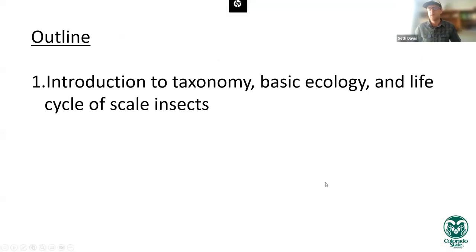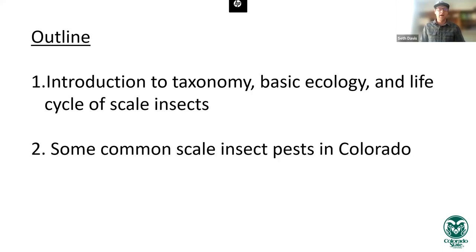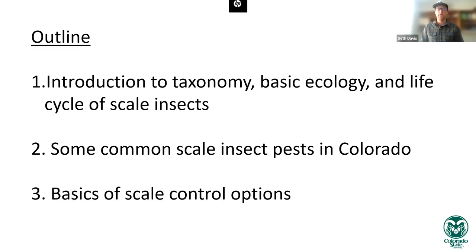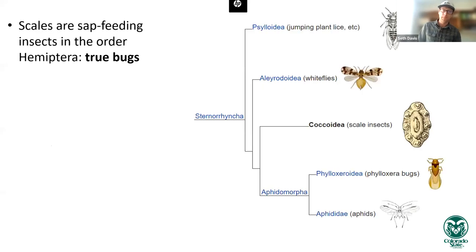The outline of the talk covers basic taxonomy and ecology, the life cycle of scales, common scale pest insects in the region — the three examples I'll give are also common throughout the western United States and Four Corners states — and then basic options for scale control, including natural control, biological control, chemical control, and cultural controls.